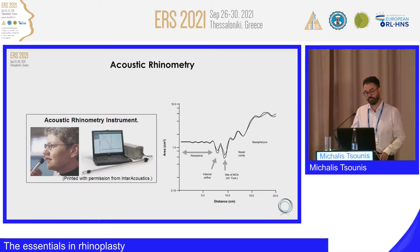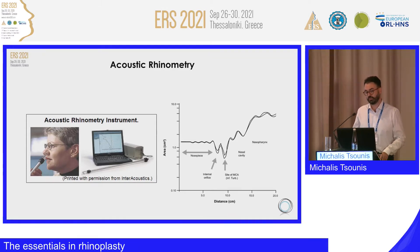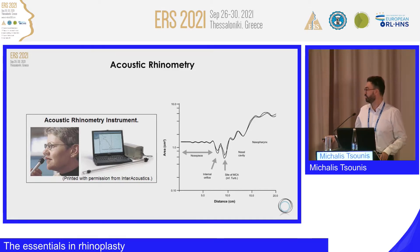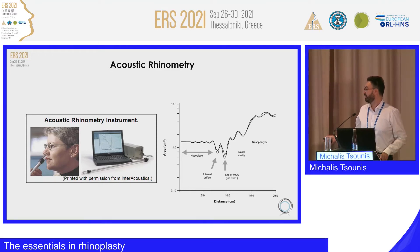Another popular method is acoustic rhinometry. An acoustic wave is produced from the edge of the probe, enters the nasal cavity, reflects, and comes back, producing a curve representing volume in relation to distance from the probe. Two typical notches appear in the curve: the first at the internal orifice and the second at the head of the inferior turbinate and the internal nasal valve — the site of minimum cross-sectional area.